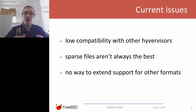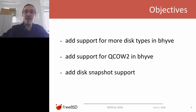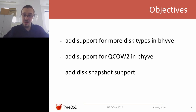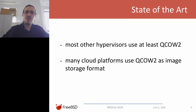We regularly want to have code that is modular and lets us extend it easily. So the objectives I had one and a half years ago were adding more disk types to Bhyve, and specifically adding the QCOW2 disk type, because this would help us with adding snapshot support. QCOW2 has support for saving the state of the disk, which is very helpful when wanting to save the whole state of the virtual machine — critical for the save and restore feature. Most other hypervisors and many cloud platforms also use QCOW2 at the moment.